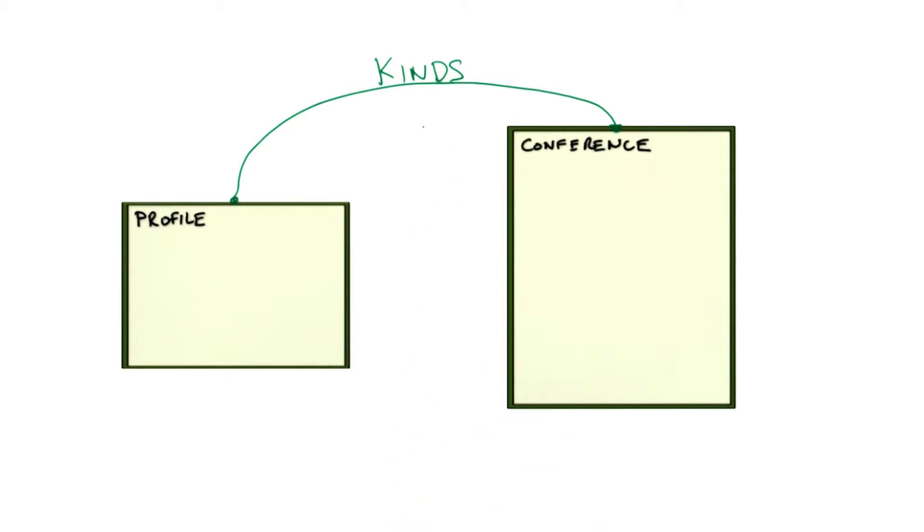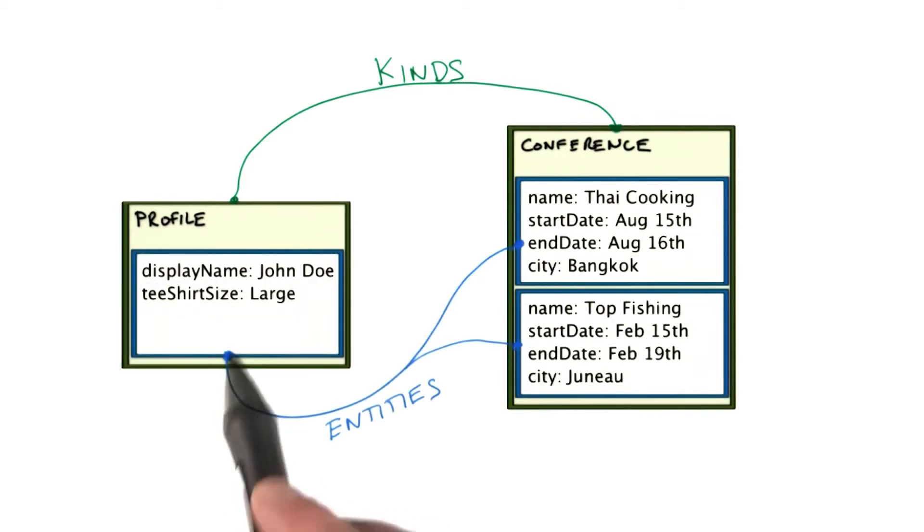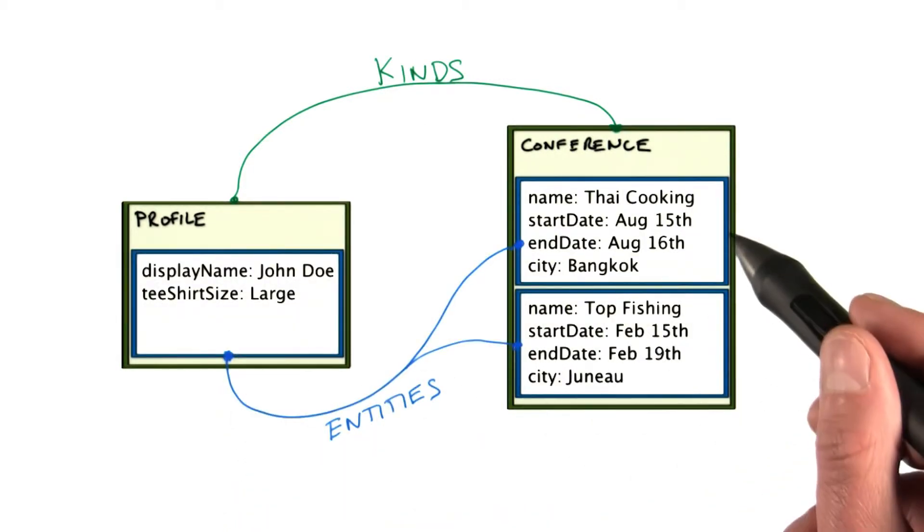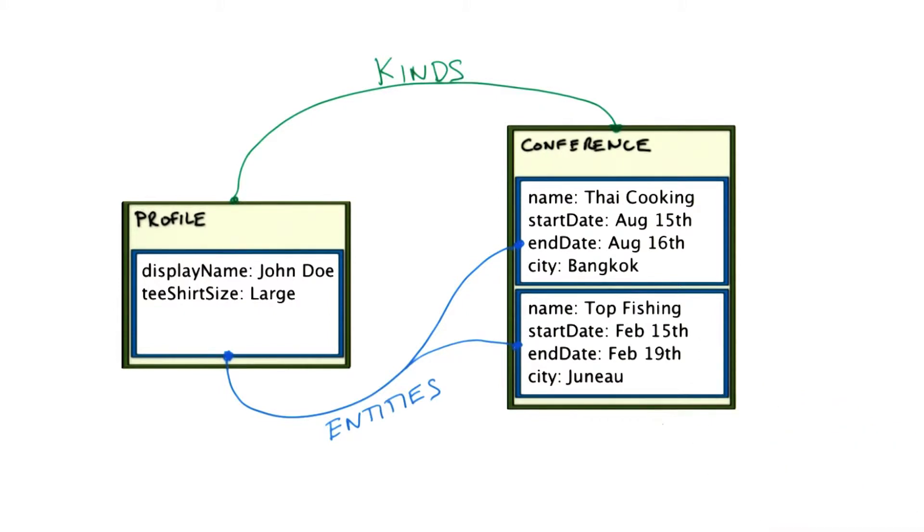Given a kind, you can create many entities of that kind. So in this picture we can see three entities, one for the profile kind and two for the conference kind. And as you can see, entities are very similar to the concept of objects in object oriented programming.